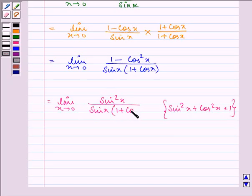Further, limit x approaches 0, we have sin x over 1 plus cos x.